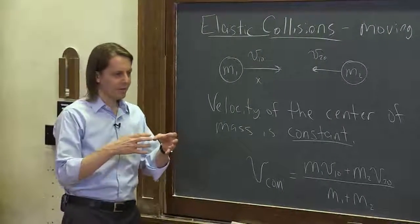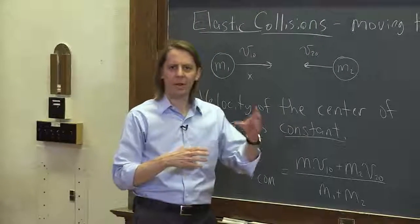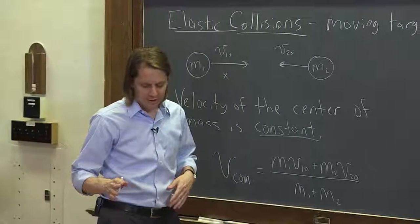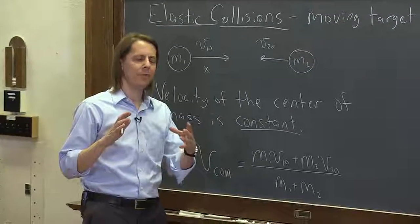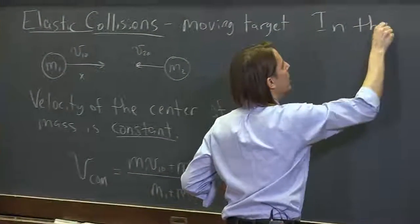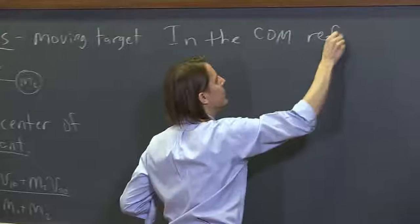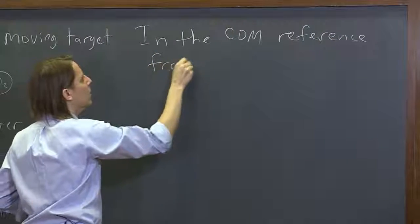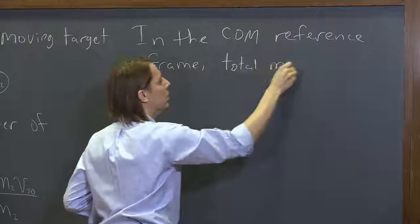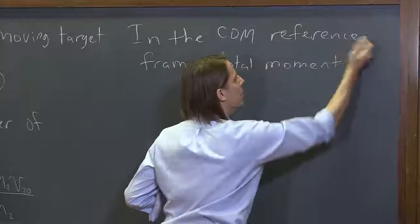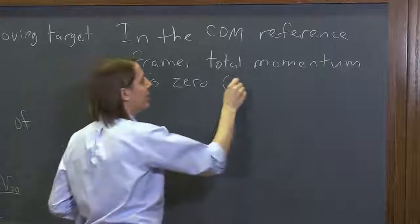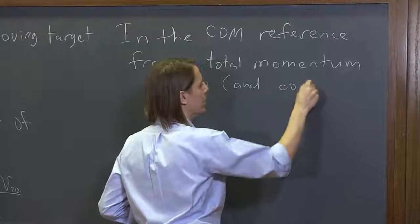Now the idea that the center of mass continues at a constant value throughout the collision isn't the only thing you need. We're also going to think about being in the center of mass reference frame. In the COM reference frame, the total momentum is zero, and of course it's also constant — so it's always zero.